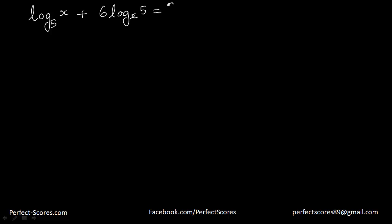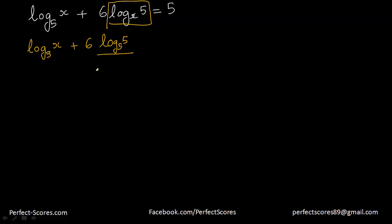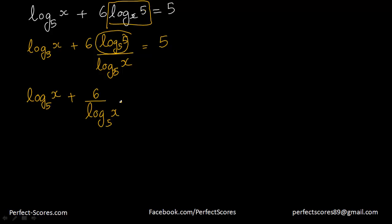Let's put that to test with a question. Suppose the question is: log of x to the base 5 plus 6 times log of 5 to the base x equals 5 — solve for x. I want to change the base of the second term to 5. Using the base change formula, that becomes 6 times log of 5 to the base 5 divided by log of x to the base 5. Since log of 5 to the base 5 equals 1, we get log x base 5 plus 6 over log x base 5 equals 5.